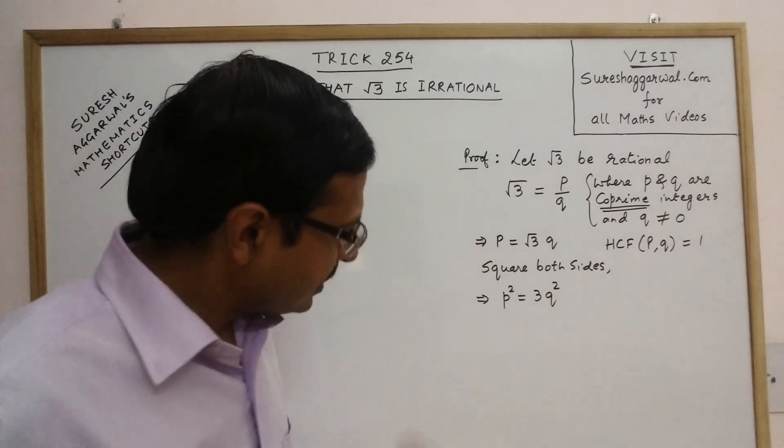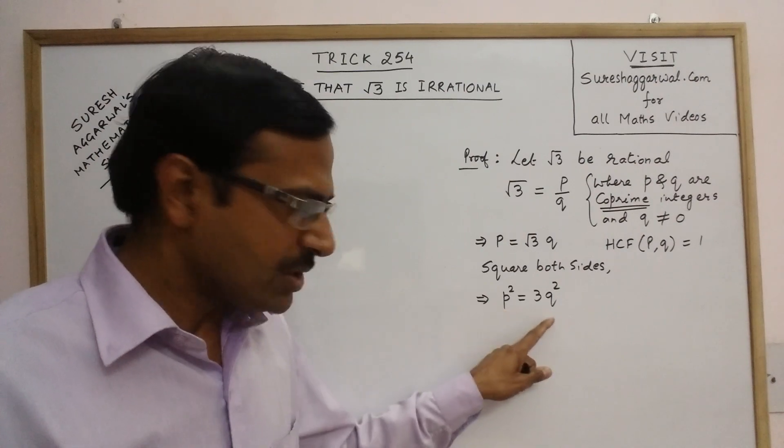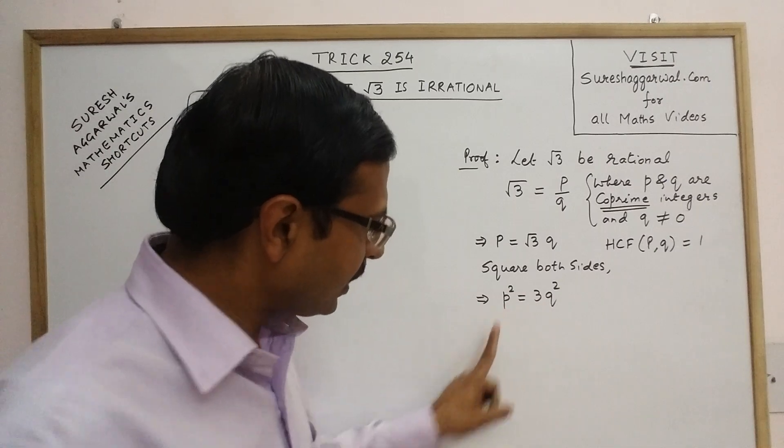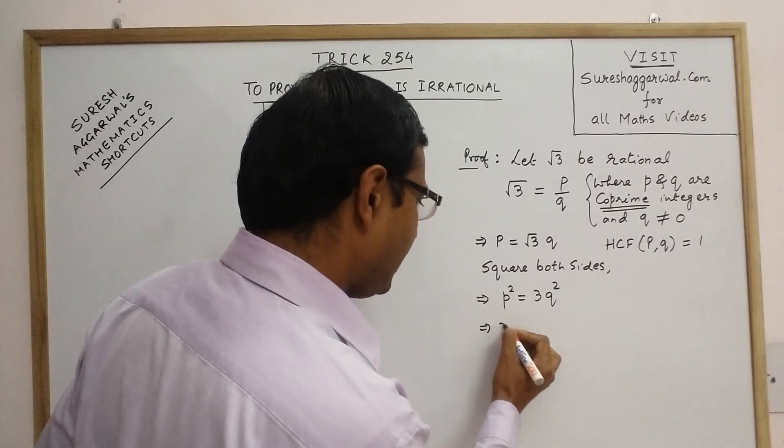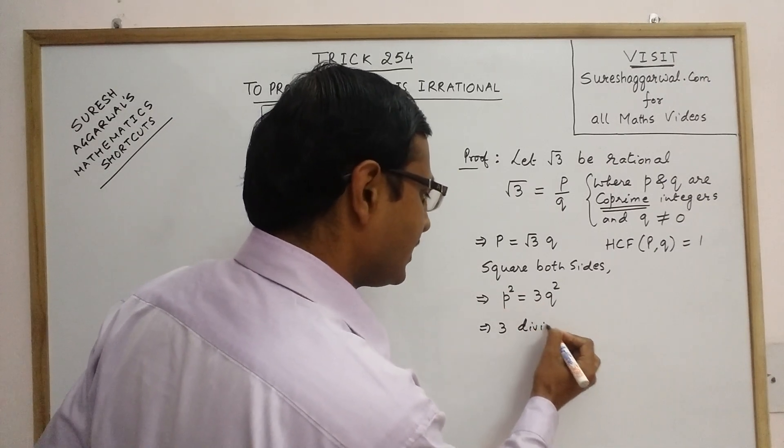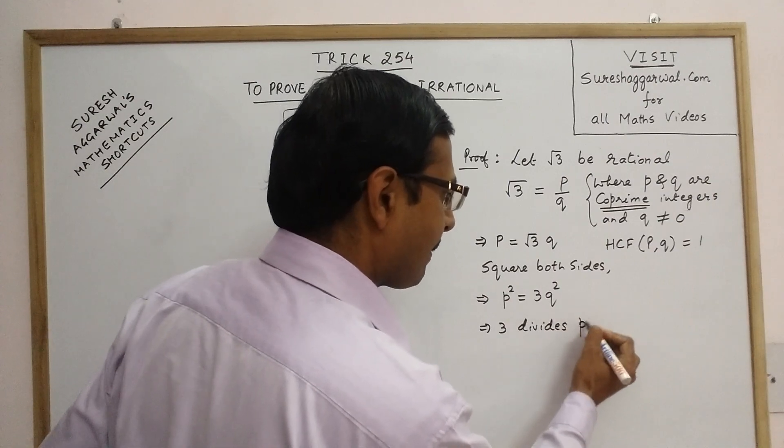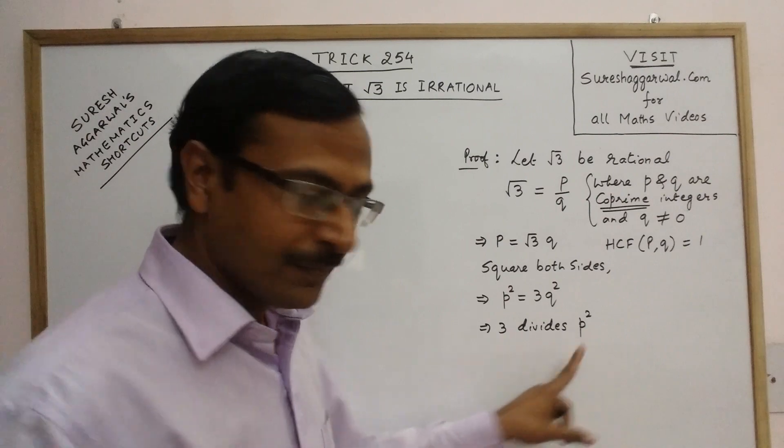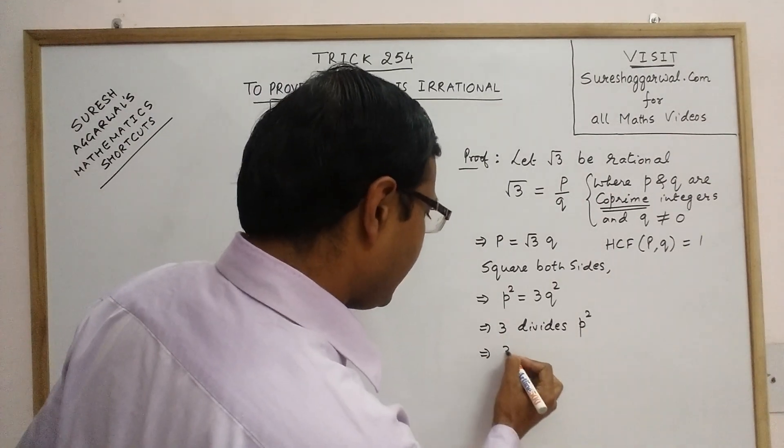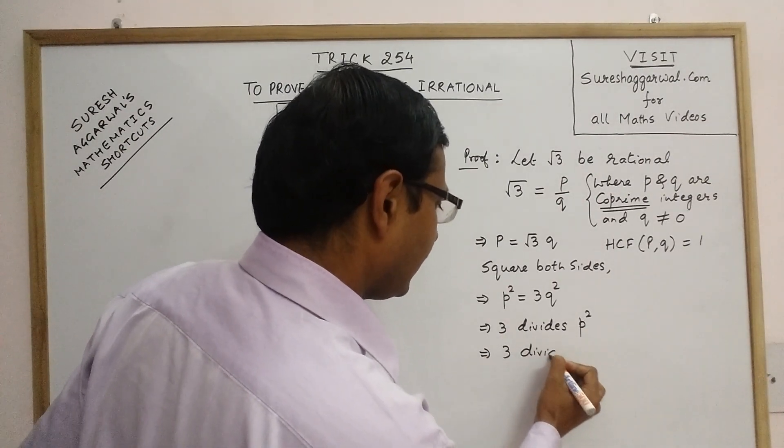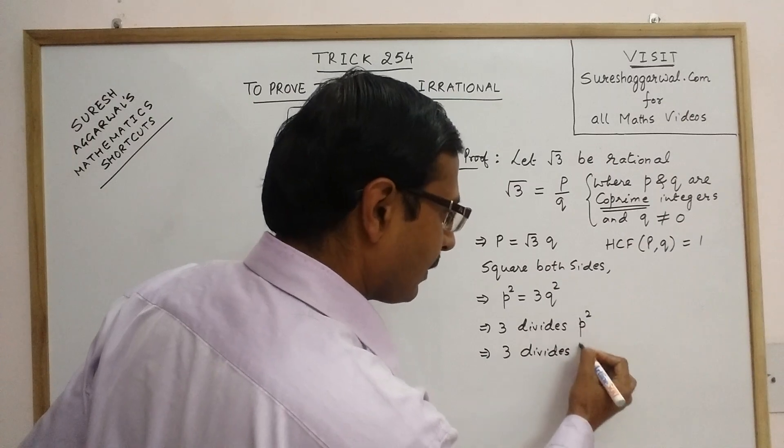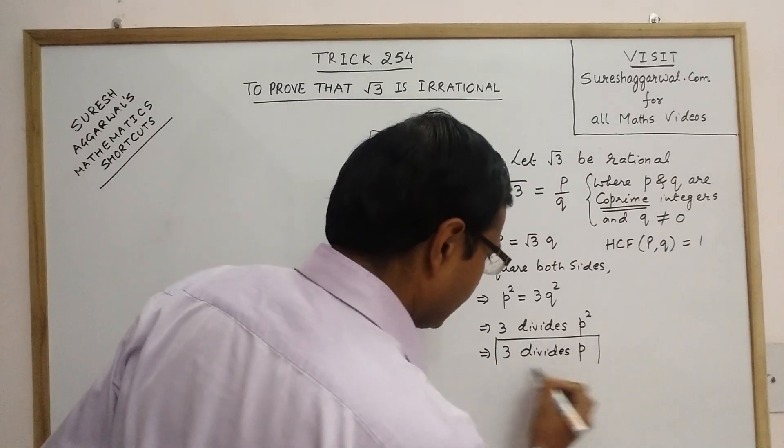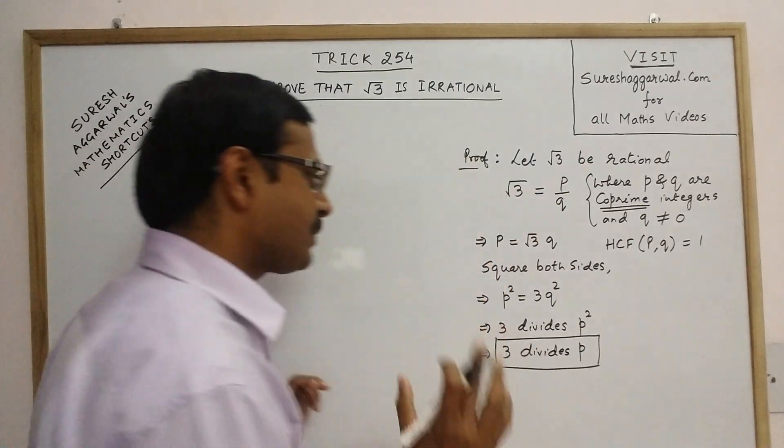Now in this equation, 3 is a factor of p square. So that implies 3 divides p square and whenever a number divides the square of any integer, then it divides the base that means this number p also. So 3 divides p.